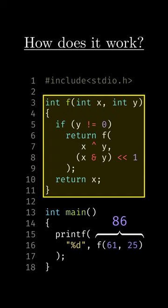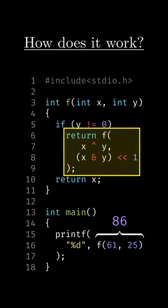Looking closely at the f function, we see that it is recursive. While y isn't 0, it performs binary operations on the numbers and calls itself, finally returning x.